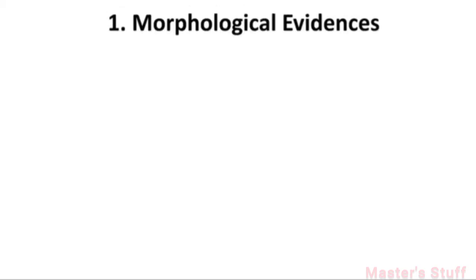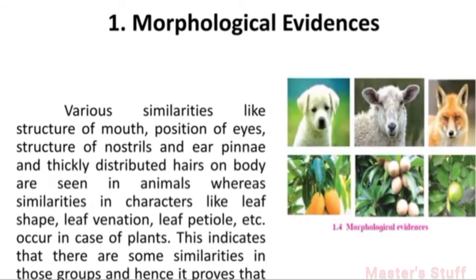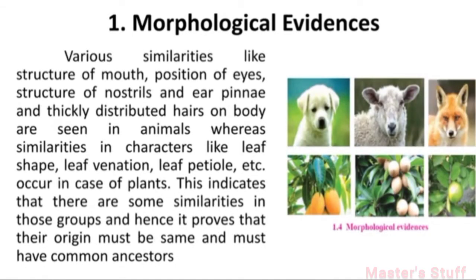First: Morphological Evidence. Various similarities like structure of mouth, position of eye, structure of nostril and ear pinna, and thickly distributed hairs on body are seen in animals. Various similarities in characters like leaf shape, leaf venation, and leaf petiole also occur in plants.